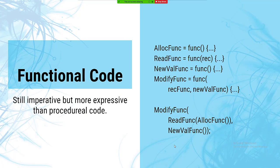Functional code is something LINQ adds, where functions are first-class members of the language. There are whole languages built from the ground up to be functional, such as Haskell, OCaml, F#, and ML. The extensions LINQ brings don't make C# nearly as functional as those languages, but if you think of functions as first-class members of the language, that'll mostly get you there.